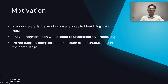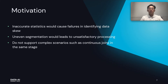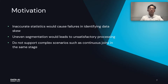Let's now look at the motivation of our talk. Although AQE skew join can handle skew joins, in most cases we still find some issues of AQE skew join in our practice. First, inaccurate statistics which cause failure in identifying data skew. Second, uneven segmentation based on highly compressed shuffle statistics will lead to unsatisfactory skew join processing. Third, AQE skew join does not support complex scenarios such as continuously joined in the same stage originally. I will detail the problem and how we handle it in the next Spark enhancement section.